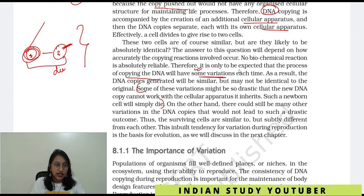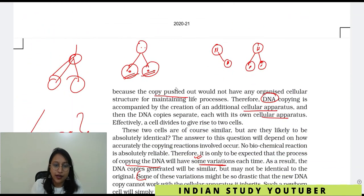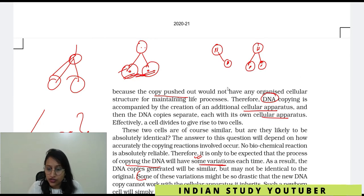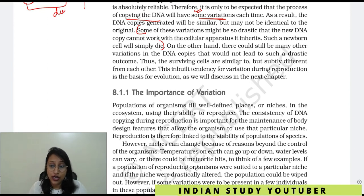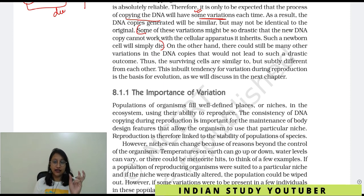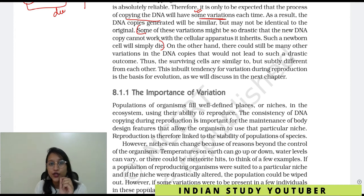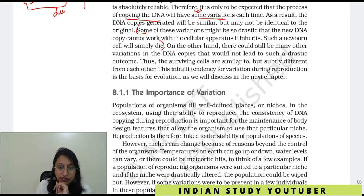Simple thing: if something is being carried forward — if the cell apparatus is carried forward — it works together with it. Thus the surviving cells are similar to but subtly different from each other. So they work together, they are similar, but still a slight variation is seen. This built-in tendency for variation during reproduction is the basis for evolution.